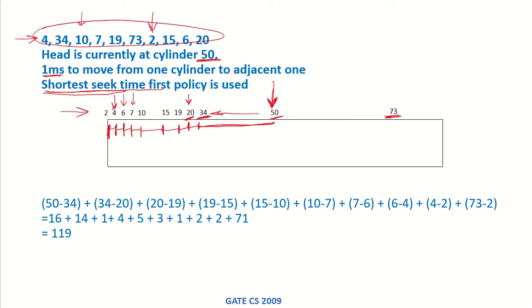After it has come to 2, then the only option left is because this is the last request, then it will have to go to 73.